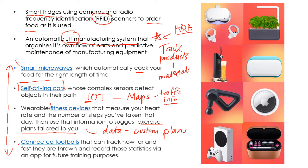Footballs can be connected to the Internet of Things through sensors inside them. They can track how far and how fast they are kicked, record those statistics via an app, and then that can be used for training purposes. For a professional football team, you might want to track how hard your team are kicking the football — it can be used to collect data to improve the team's performances.